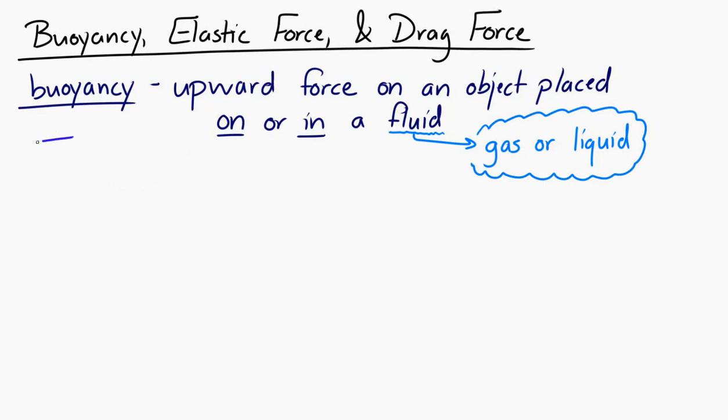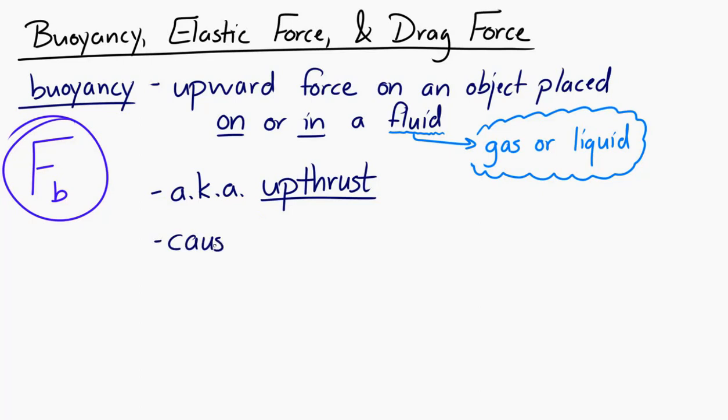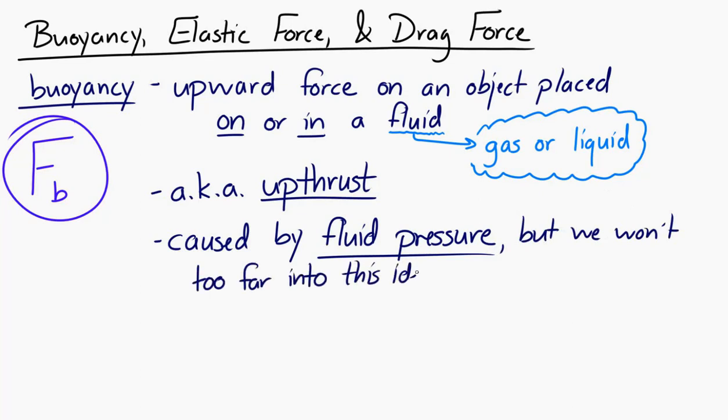It's usually represented with Fb, and sometimes you will hear it called upthrust, which kind of makes sense because it's an upward force. Now buoyancy arises from fluid pressure, but we're not going to get too far into the real origins of buoyancy. But it has to do with gravitational force. You can see that because it's always opposing the gravitational force. It's always upward.